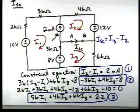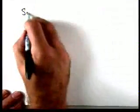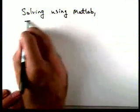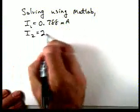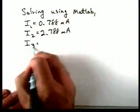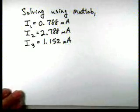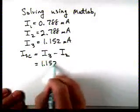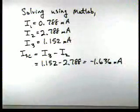We solve those three equations using MATLAB. I1 turns out to be 0.788 milliamps, I2 is 2.788 milliamps, and I3 is 1.152 milliamps. Since I short-circuit equals I3 minus I2, we get 1.152 minus 2.788, which equals minus 1.636 milliamps. So now we have I short-circuit and R_N.